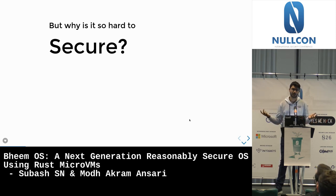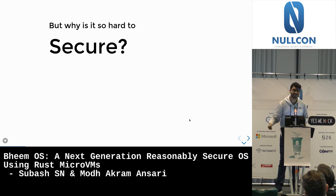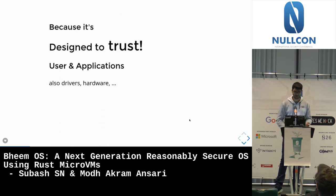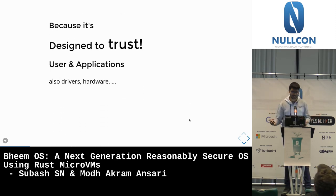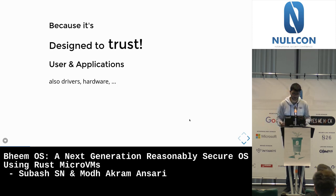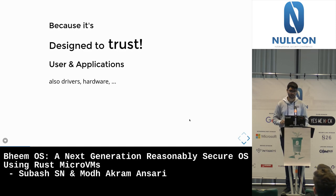Why is an operating system so hard to secure? Complexity, and root is too wide open. If you want to do anything in a Linux operating system, you need some sort of administrative privileges and it's too open. Fundamentally, it's designed to trust — designed to trust users to be sensible and applications to be secure. There are also other aspects like drivers and hardware that contribute, but let's talk about two critical aspects that aren't addressed well enough.